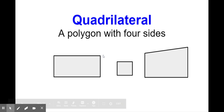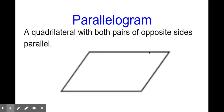So a quadrilateral is a polygon — a closed figure with four sides: one, two, three, four. And those four sides don't always have to be straight like that. They can actually be at angles like that. But a quadrilateral is a polygon with four sides.